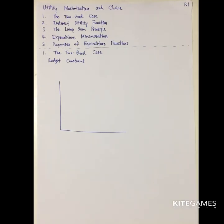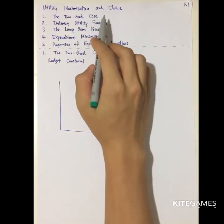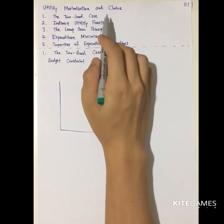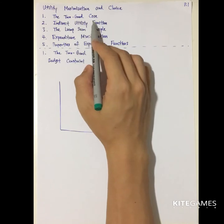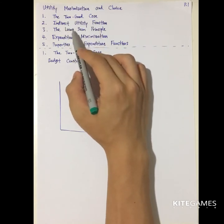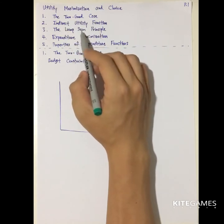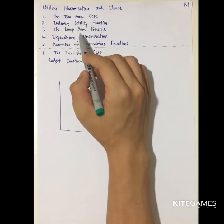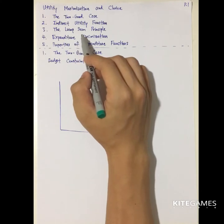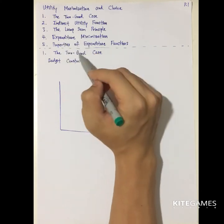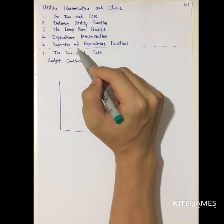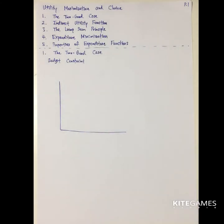In this video, we'll talk about how people make decisions based on utility maximization and how they make choices. First, we'll talk about the two good case. Second, we'll talk about the indirect utility function. Third, we'll discuss the lump sum principle. Fourth, we'll discuss the expenditure minimization and finally the properties of the expenditure functions.